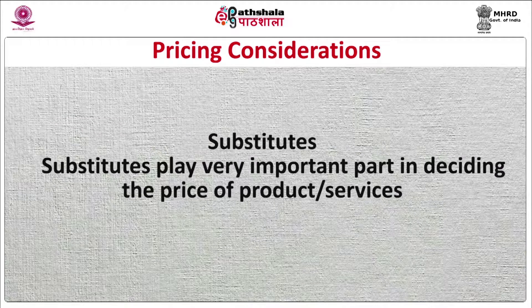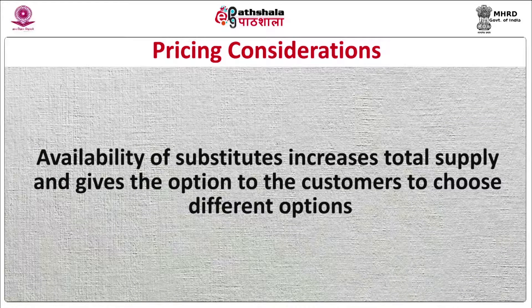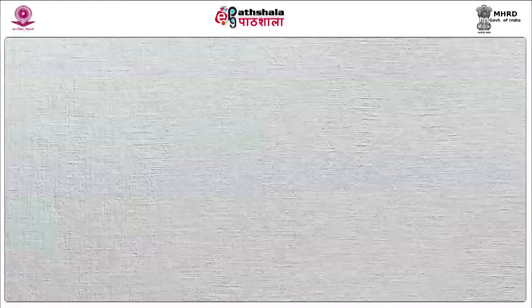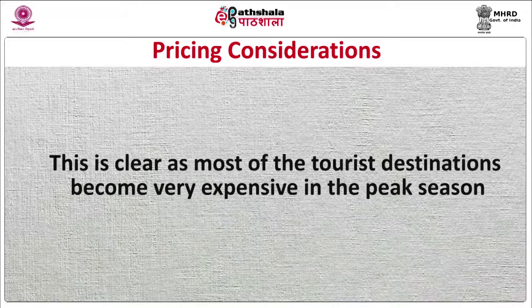Number four, Substitutes. Substitutes play a very important role in deciding prices. Availability of substitutes increases total supply and gives customers the option to choose different options. For example, high-end train travel is substituted by low-cost airlines. However, not all components of tourism have relevant substitutes — a national park or a beach is very unique and not substitutable. If substitutes are not available, prices will increase as demand goes up, which is evident as most tourist destinations become very expensive in peak season.